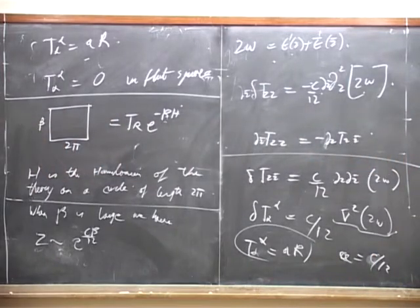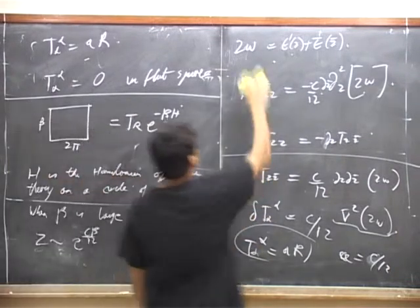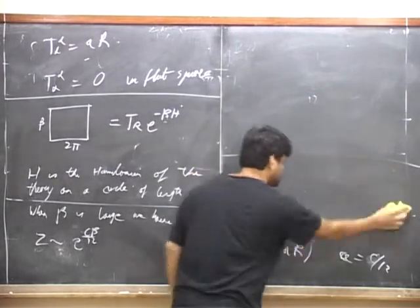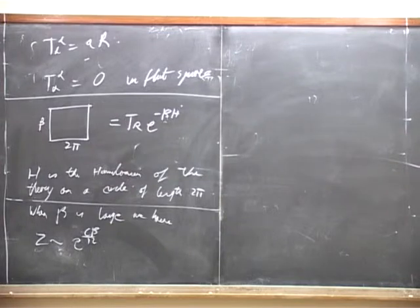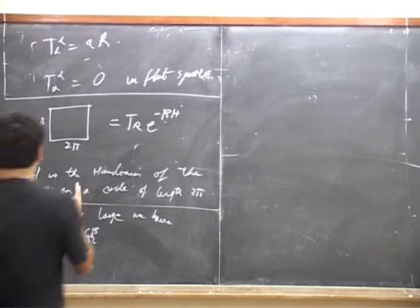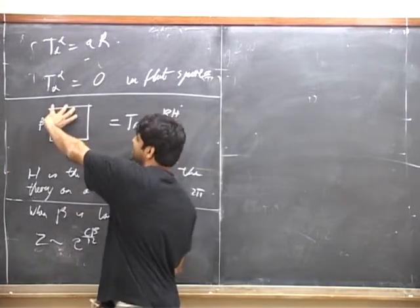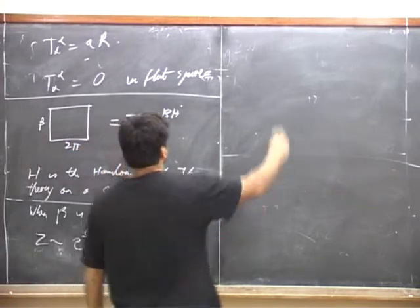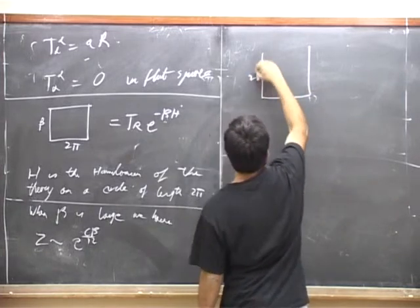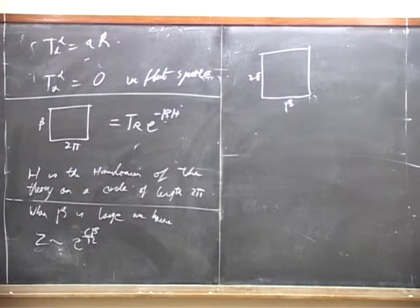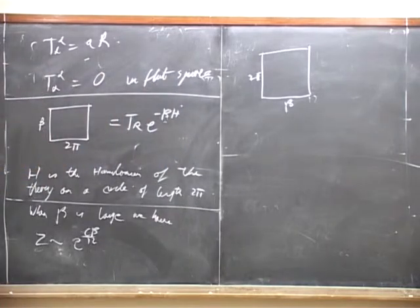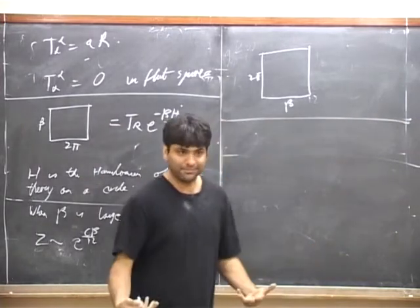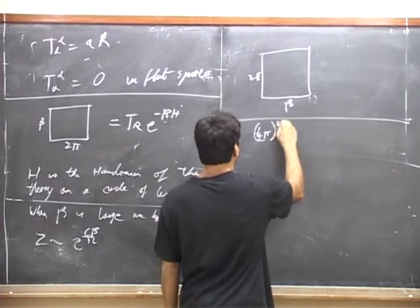So when β is very large, the partition function is approximately e^{+β C/12}, dropping terms exponentially suppressed. The degeneracy of the vacuum is 1. Now let's take this partition function and view it slightly differently — take this torus and flip it around in my mind. So it becomes a torus one of whose sides is β and whose other side is 2π. Now by a scale transformation, I can shift this to a torus which has sides 4π²/β and 2π.